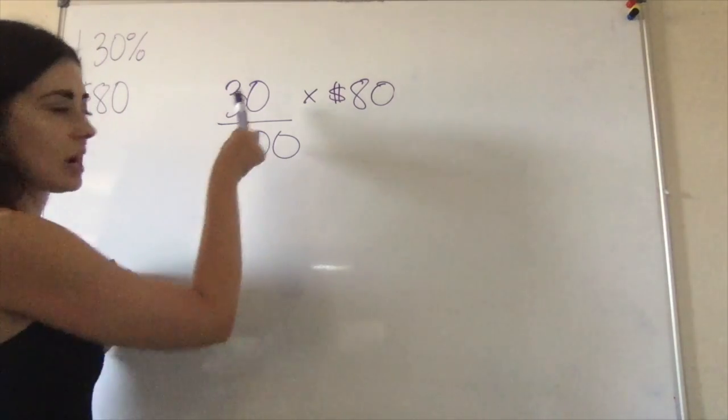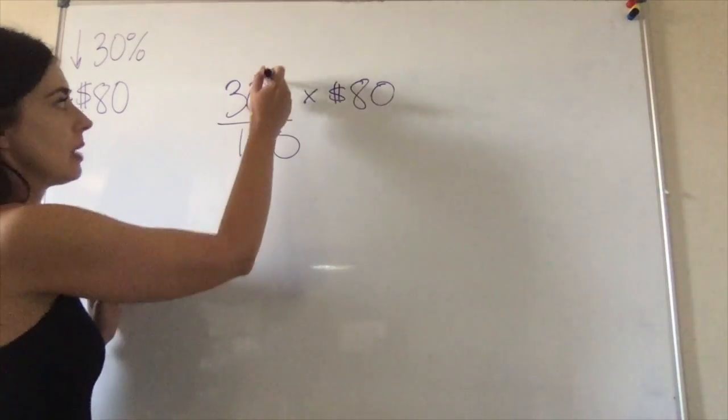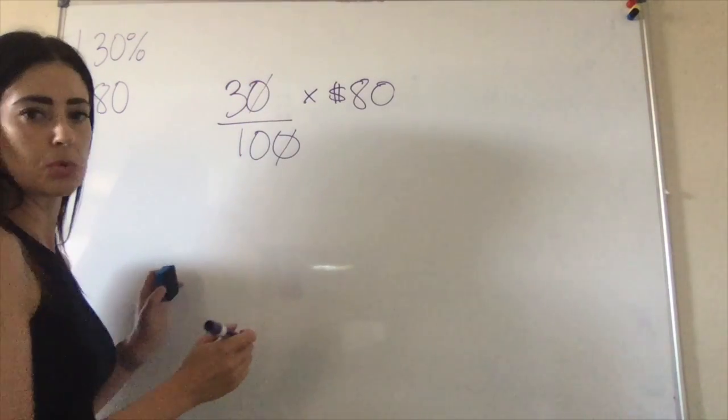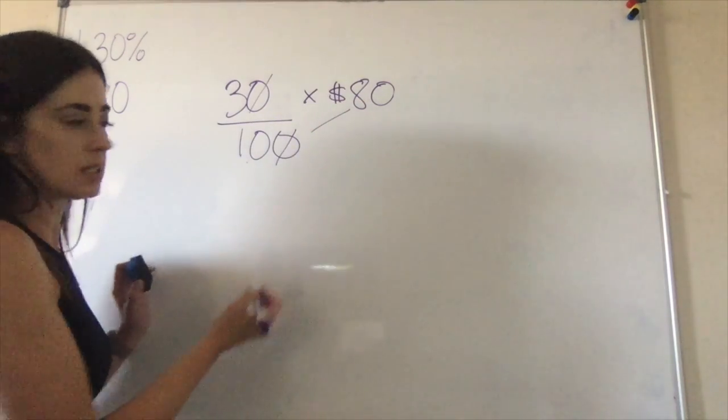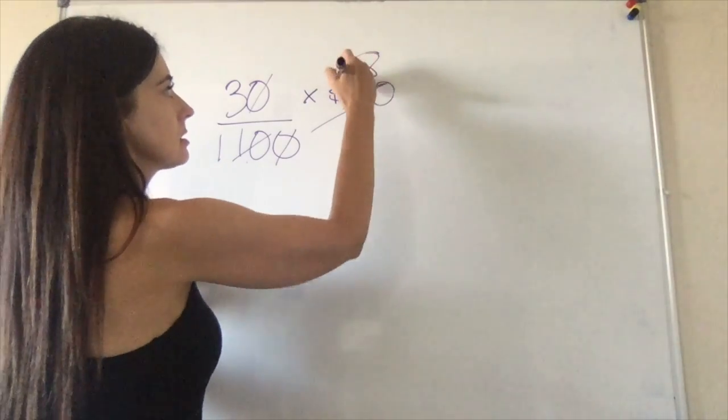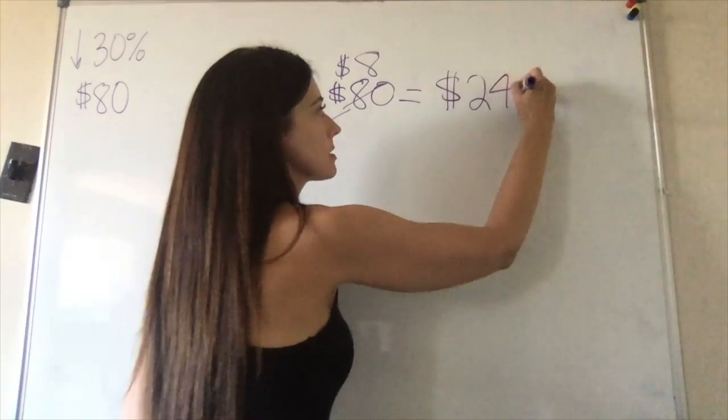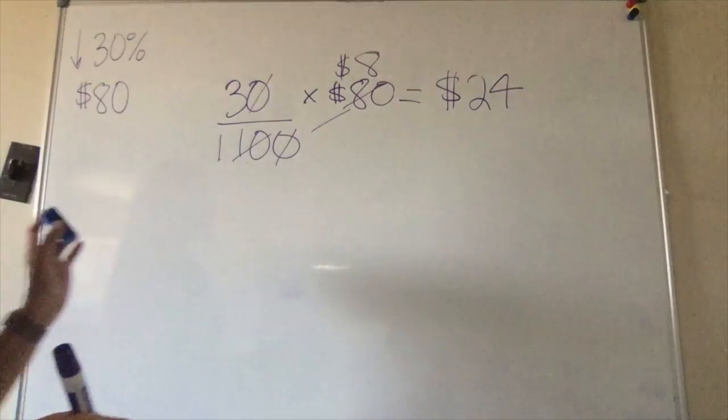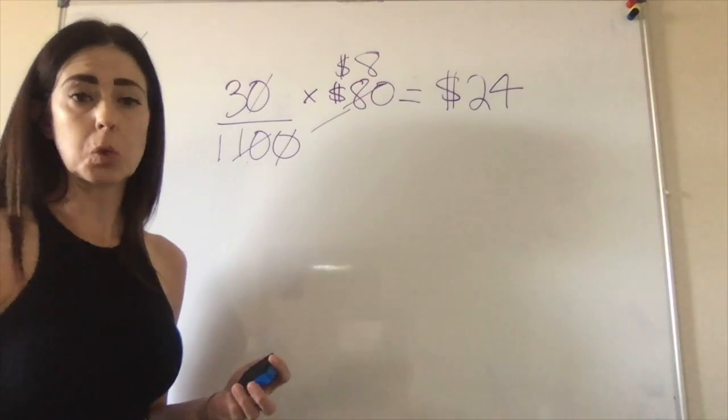So now I have thirty one-hundredths times eighty. I recognize that I can reduce this to three-tenths times eighty, and then I can also cross-reduce these: this becomes one, this becomes eight dollars. Three times eight dollars is twenty-four dollars. That was pretty easy, huh?